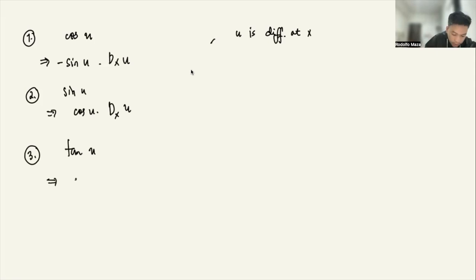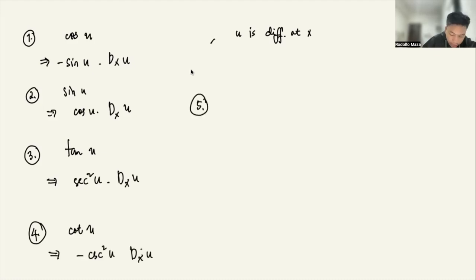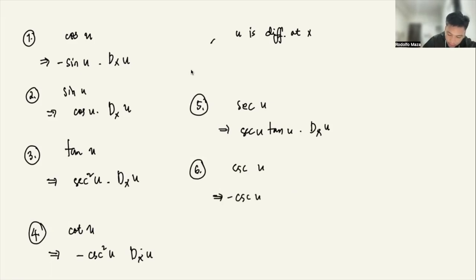For cotangent u, the derivative is negative cosecant squared u times du/dx. For secant u, the derivative is secant u tangent u times du/dx. For cosecant u, the derivative is negative cosecant u cotangent u times du/dx. That's it.